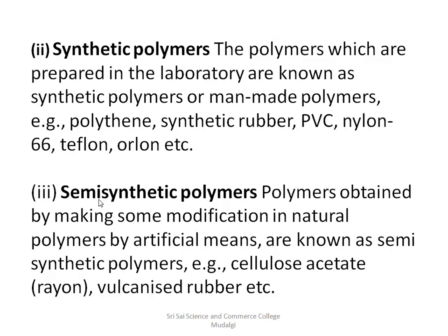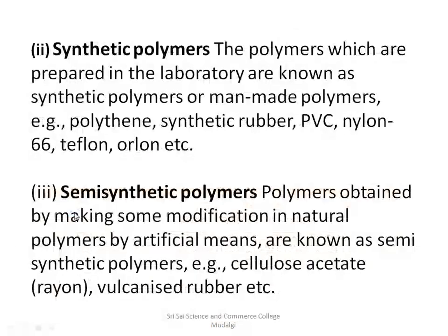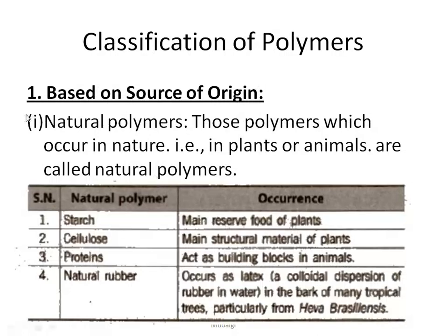The third type is semi-synthetic polymers. As the name indicates, semi-synthetic means partial — these are polymers obtained by making some modification in natural polymers by artificial means. Examples include cellulose acetate, commonly called rayon, and vulcanized rubber. So natural polymers occur in nature, synthetic polymers are man-made, and semi-synthetic polymers involve slight modifications of natural polymers.